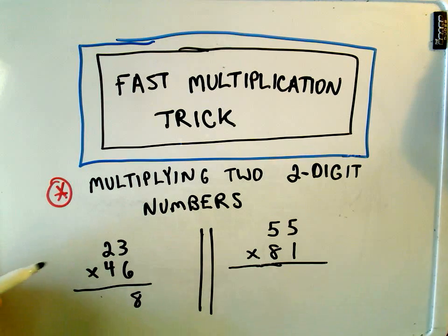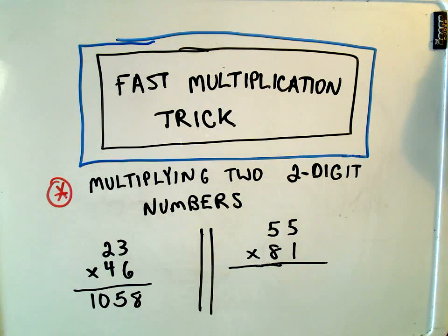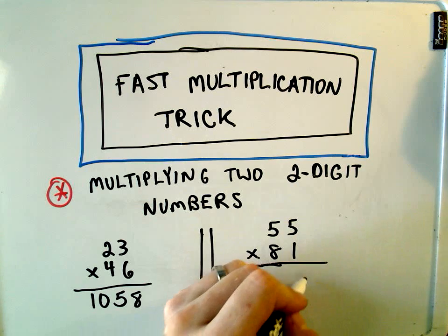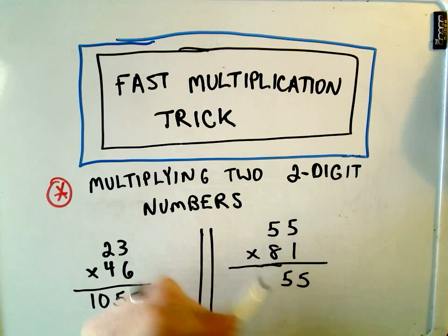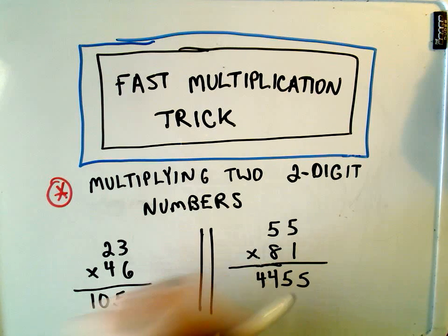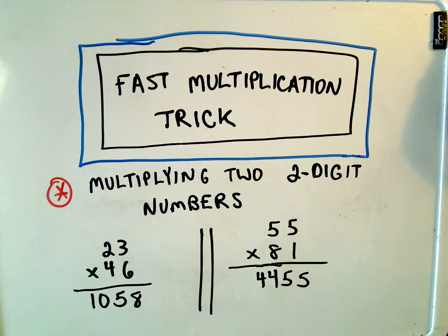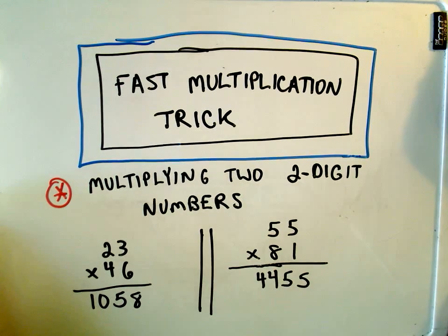So I get 1,058 for the first one, and let's see, 5 and 4, 4, 5, 5 for the other one. So let's see how I was able to do those so quickly in my head.